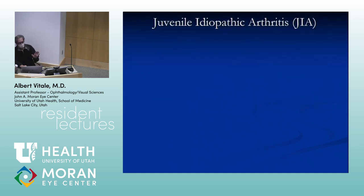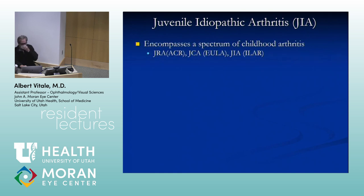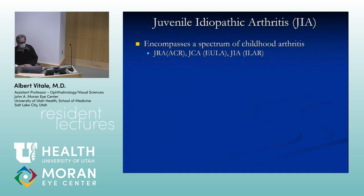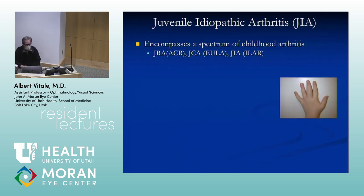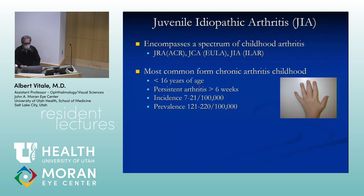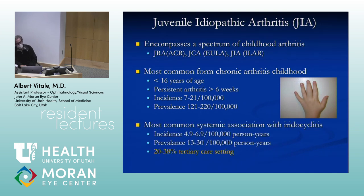A little didactic material on JIA. JIA, JRA, JCA — it depends on the classification system. We use the ILAR (International League Against Rheumatism) classification rather than the ACR. JIA is the most common form of childhood arthritis and the most common systemic association with uveitis.